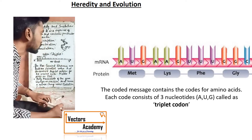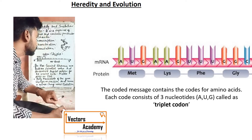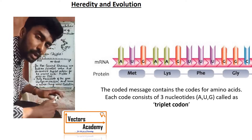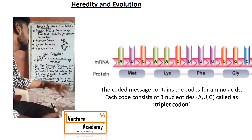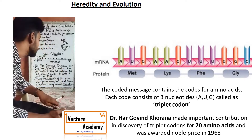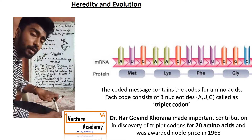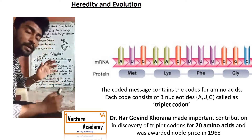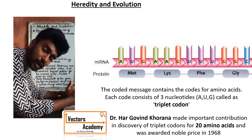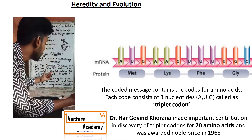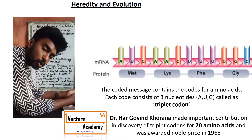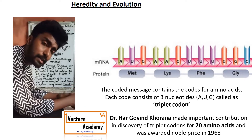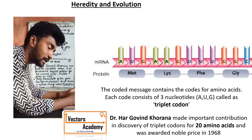Now let's talk about translation. Dr. Hargobin Korana was the first Indian scientist who discovered triplet codons for 20 different amino acids. In nature, there are 20 different amino acids, and these are coded by codons. Dr. Hargobin Korana was awarded the Nobel Prize in 1968.